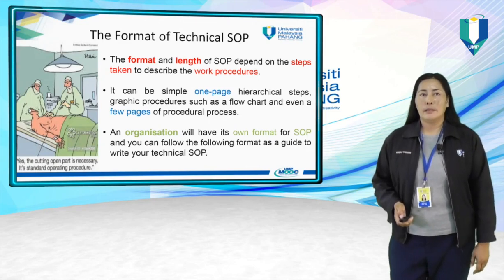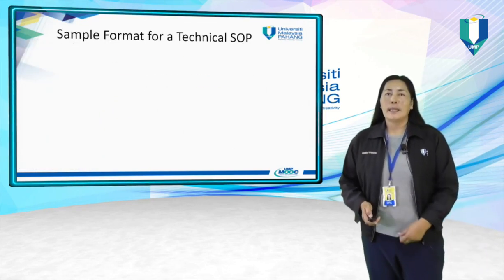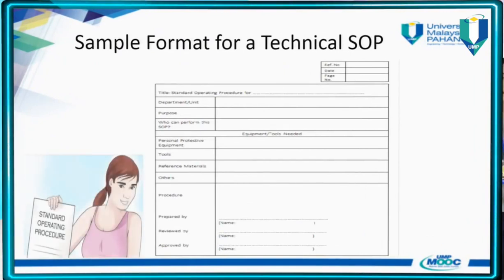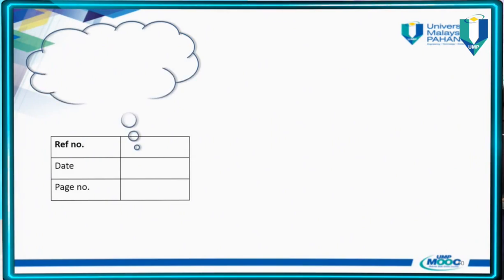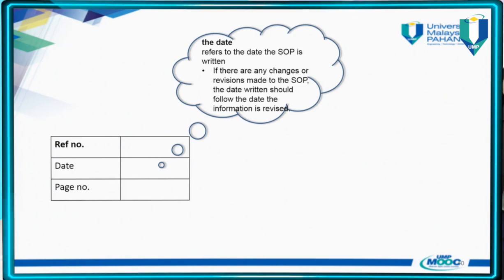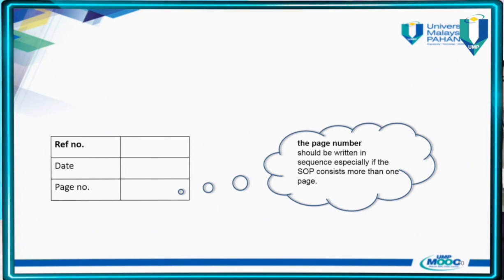This is a sample of a simple technical SOP format, and we shall go through it section by section. The first things you need in an SOP are the reference number, the date, and the page number. The reference number is for filing and recording purposes. The date refers to the date when the SOP is written; however, if you revise the SOP and make changes, you have to change the date to the day the SOP is revised. The page number has to be written in sequence — page 1, page 2, page 3, etc.